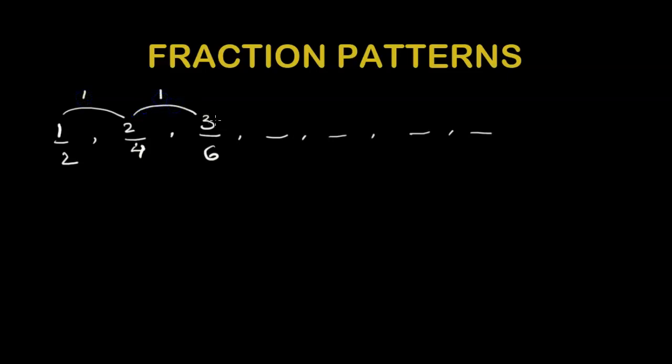2 goes up to 3, that means we are adding 1 again. When we check the denominator we are going up by 2's. So from here we notice that the numerator goes up by 1's and the denominator goes up by 2's.